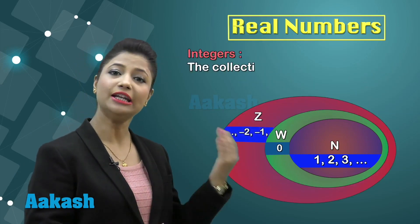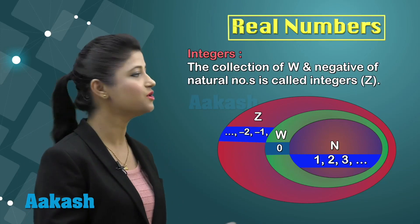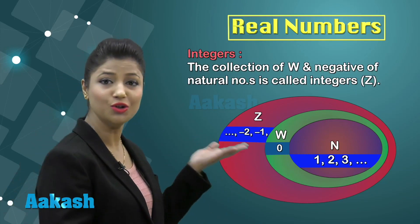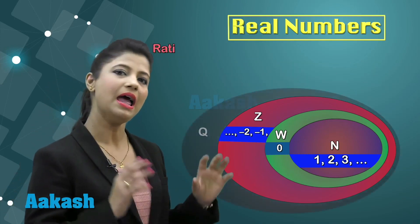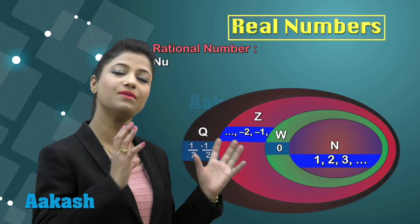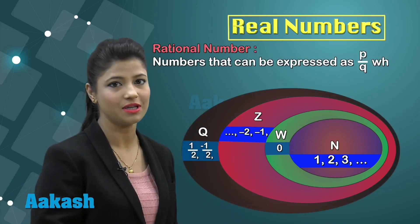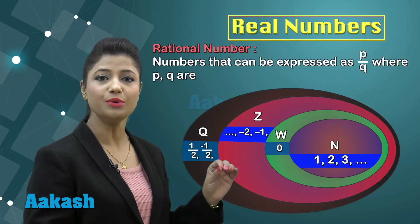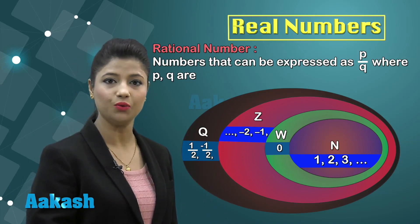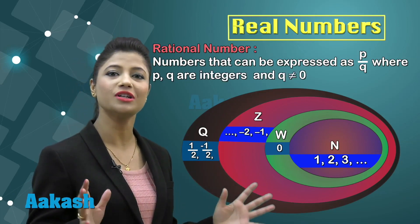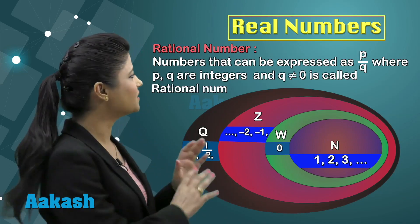When the negative of natural numbers are added to the collection of whole numbers, you obtain the new collection of numbers called integers. Then we have the collection of rational numbers, which are the numbers that can be expressed as p/q, where p and q are integers and q is not equal to 0.